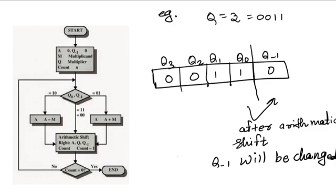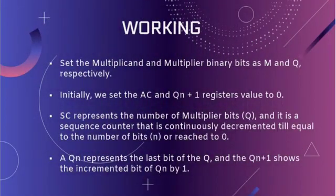Hello everyone, my name is Sai and I am going to explain the working of Booth's algorithm. We denote the multiplicand and multiplier binary bits by M and Q respectively. Initially we set the accumulator AC and the Q(n+1) register value to 0, as seen in the flowchart. SC represents the number of multiplier bits and is a sequence counter that continuously decrements until it equals 0. Q(n) represents the last bit of Q, and Q(n+1) shows the incremented position of Q(n) by 1.